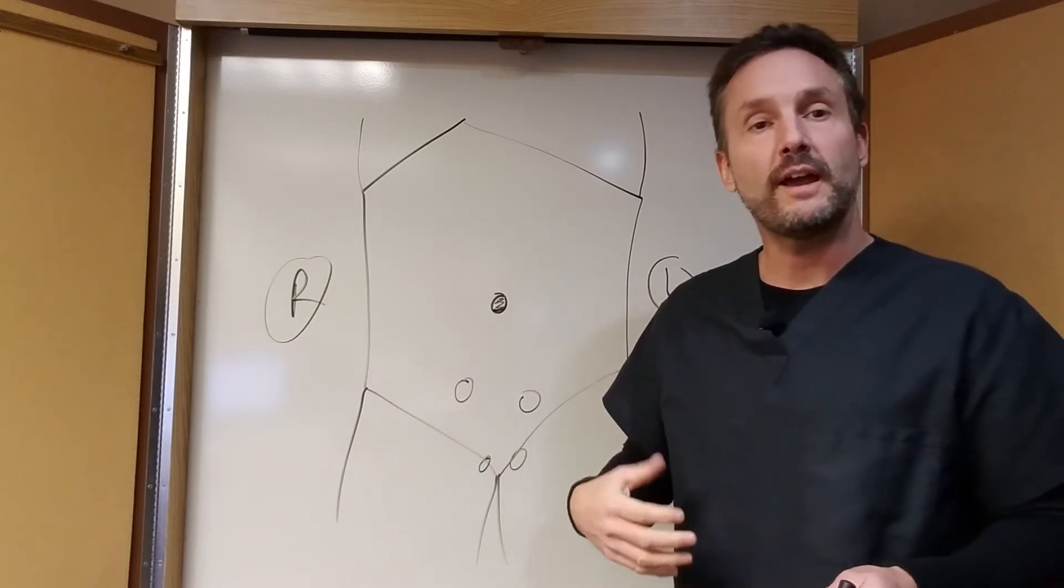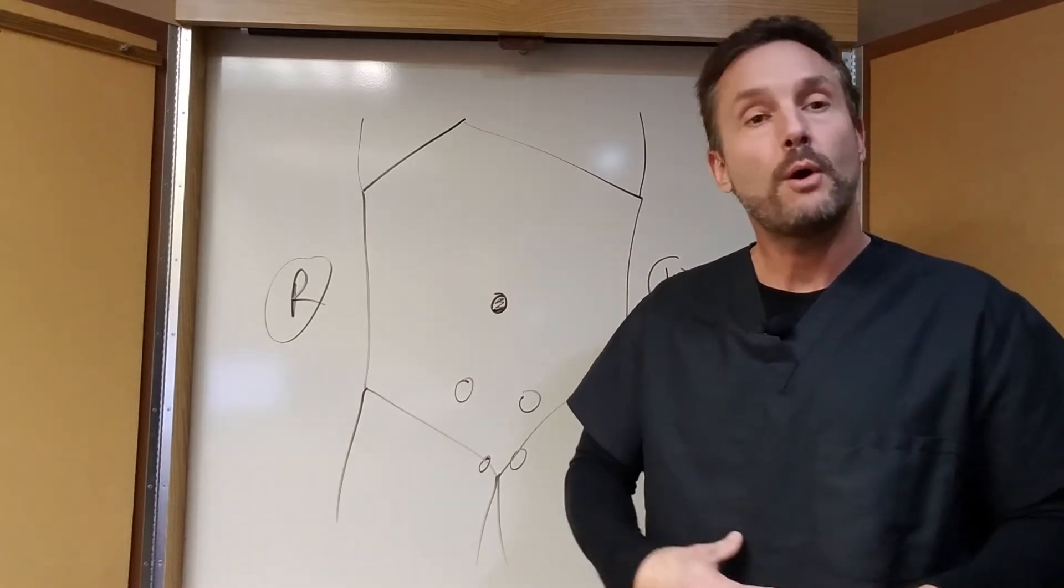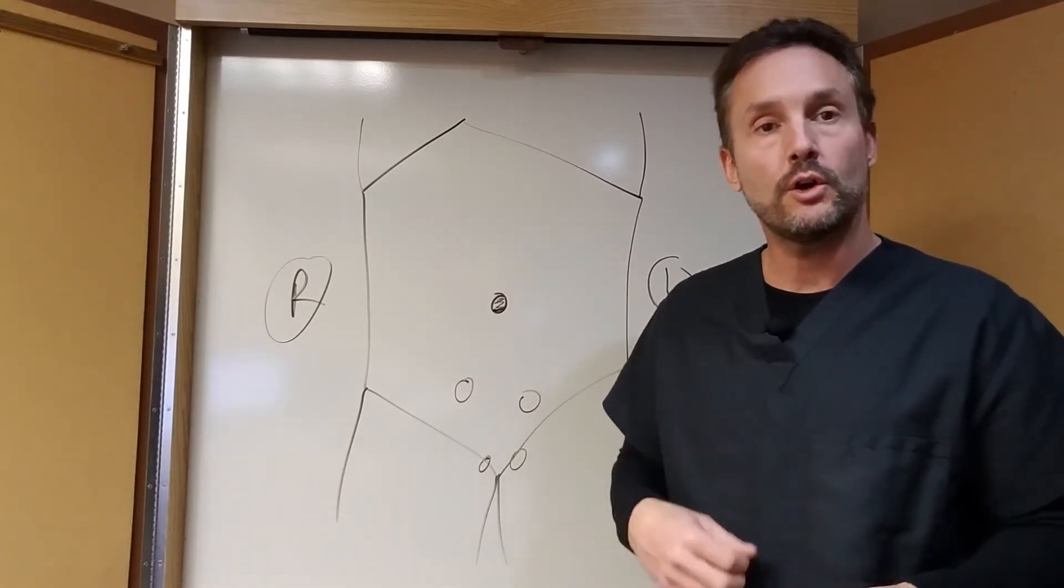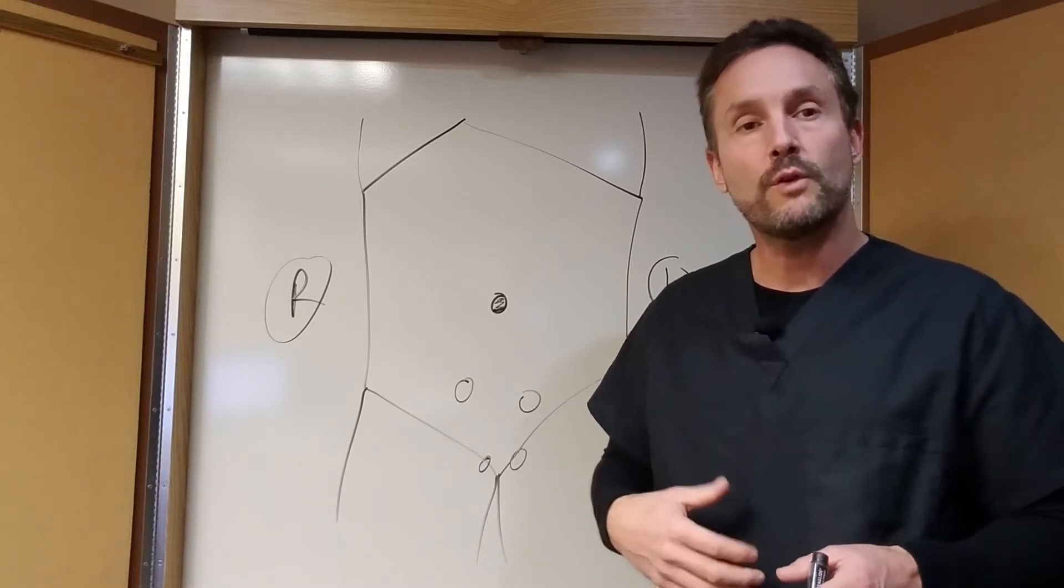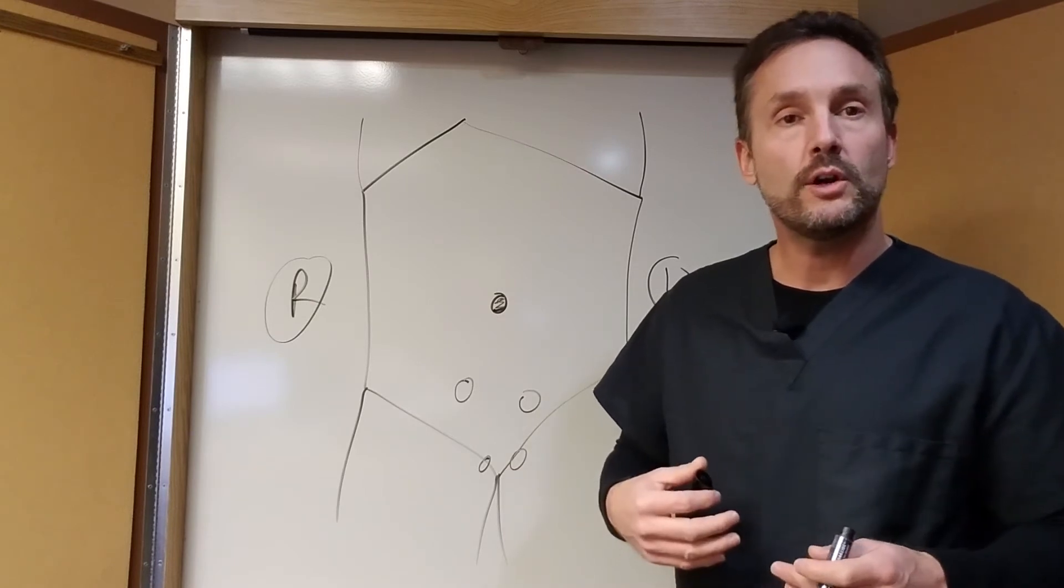And then later in life, that thing starts to stretch out and you get fluid and then you can actually get part of your intestines poking through that umbilical hernia. That usually happens in overweight people because they're pushing from the inside out. So those are the most common hernias.